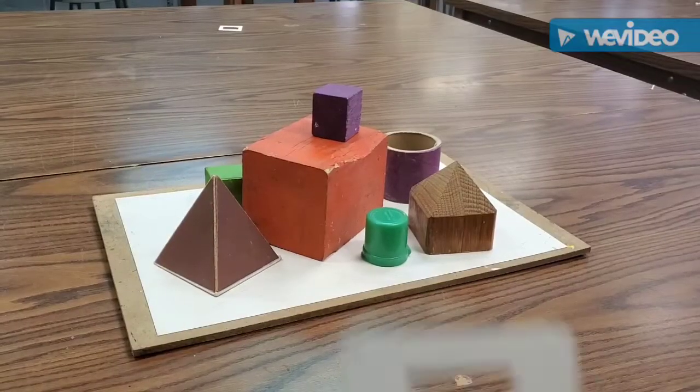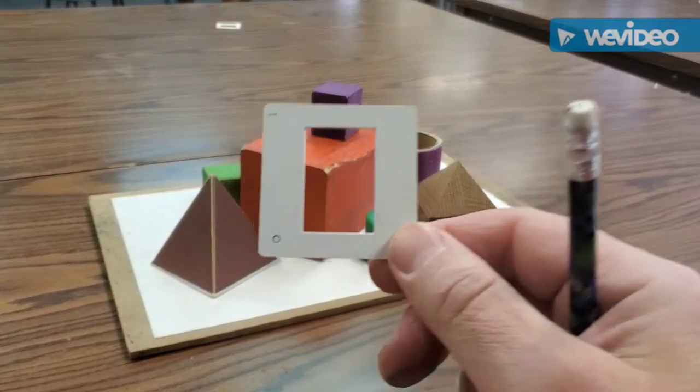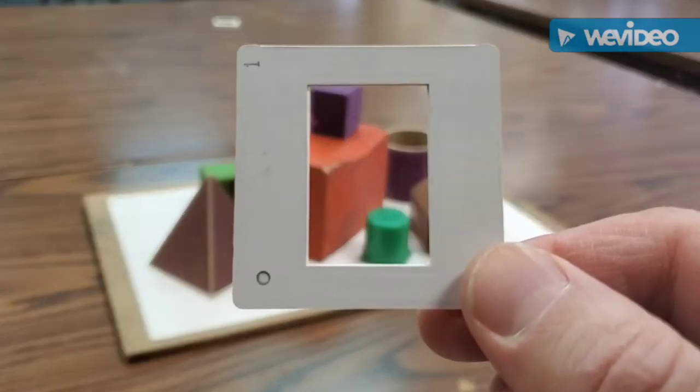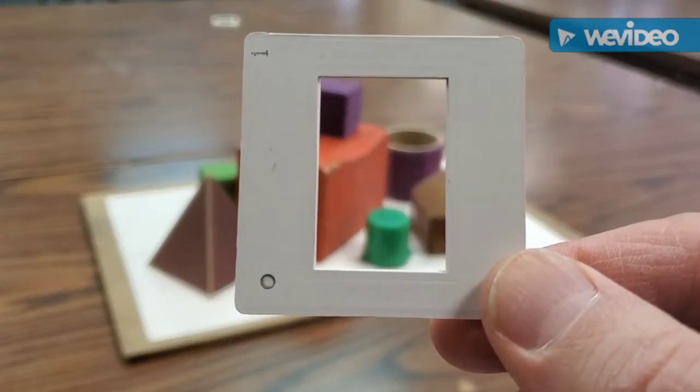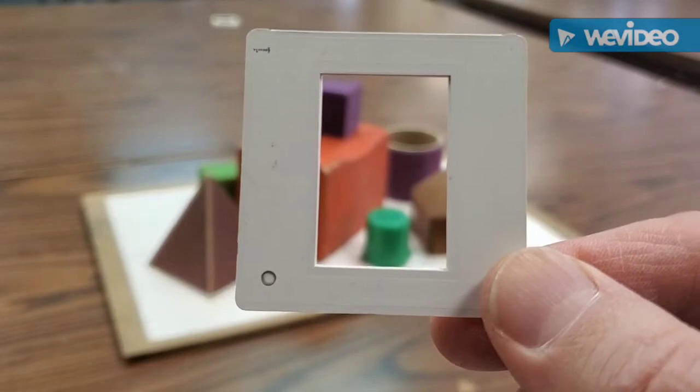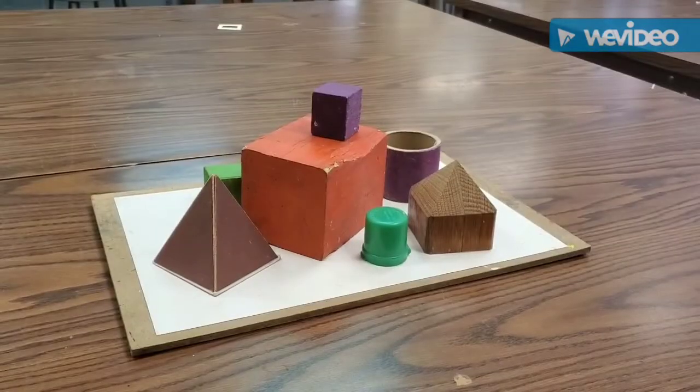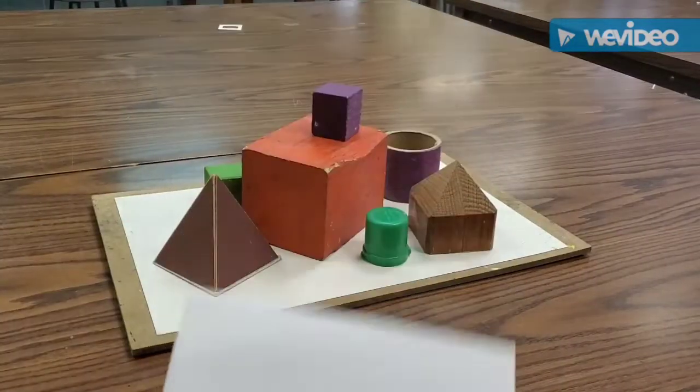Okay, now I'm going to do a second drawing. This time I'm going to hold my frame vertically, and I'm going to zoom in and just get a portion of the objects framed like this. Okay, and then I'm also going to draw those on the paper vertically as well.